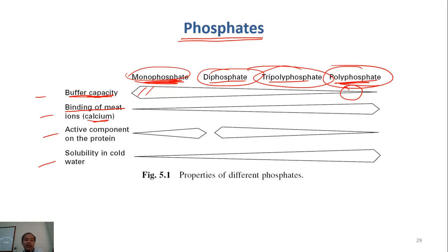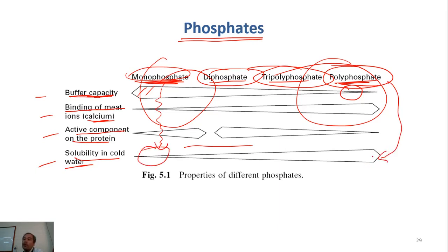In binding of meat iron like calcium, this one is lower, this one is higher. In active component of protein means that the possibility that it has to solubilize protein, then it's like this. In solubility in cold water, then the monophosphate doesn't dissolve easily in cold water. This one can be dissolved easily in water and so on. So normally, if you look at a food, you see that people use several phosphates, not only one. Because they want different properties, different roles. So normally, they combine different phosphates together in one recipe.